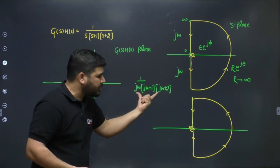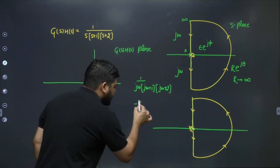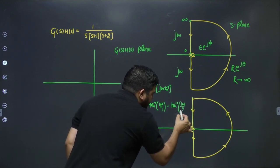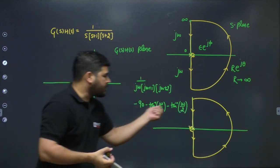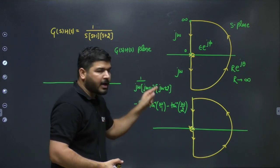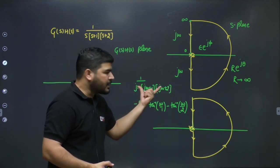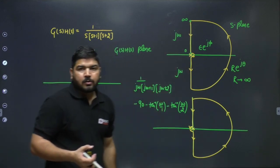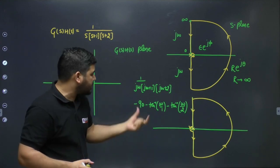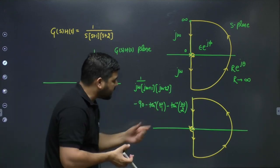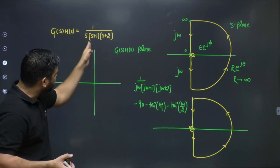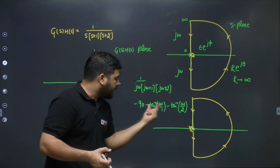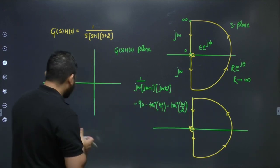The phase of this function is −90° − tan⁻¹(ω/1) − tan⁻¹(ω/2), and the magnitude is 1 / [ω · √(ω²+1) · √(ω²+4)]. When ω→∞ the angle is −270° and the magnitude is zero, so the polar plot starts at the origin pointing along the −270° direction.